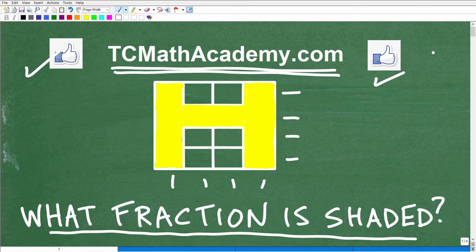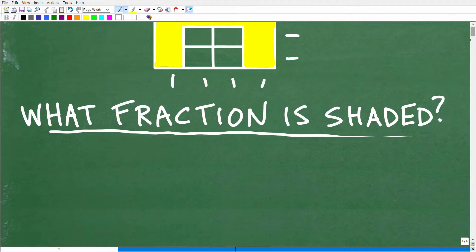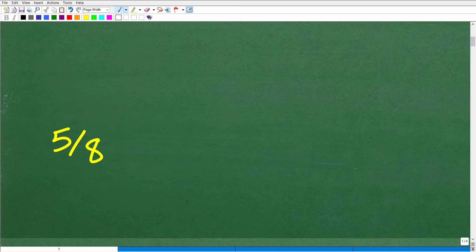So again, hopefully you can see this pretty nicely on your phone or computer. You can kind of count out how many grids are here if you just pause the video and look at it. But the answer is what? Well, what fraction would represent this shaded part out of the entire figure? The answer is 5/8.